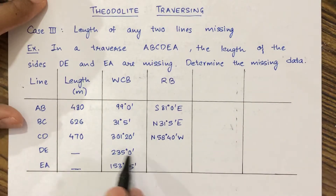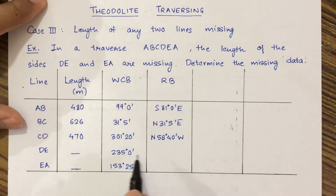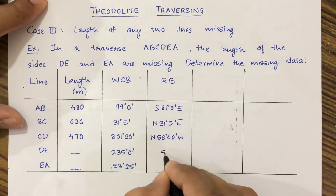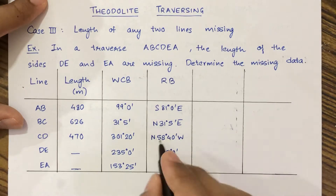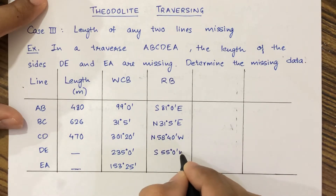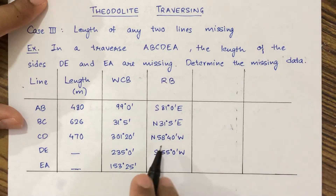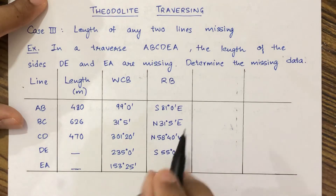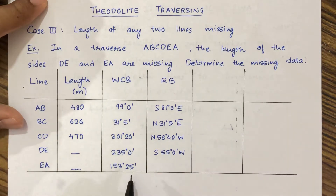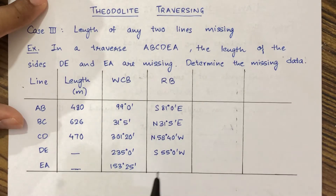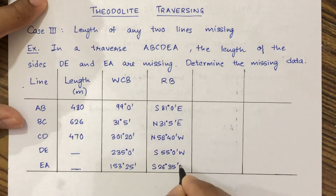Similarly, 235 degrees is in the third quadrant, that is south west. When we subtract 180 degrees from 235 degrees we get 55 degrees 0 minutes south west. Then 153 degrees 25 minutes is in the second quadrant, that is south east. When we subtract this by 180 we get 26 degrees 35 minutes south east.